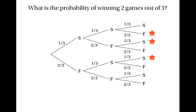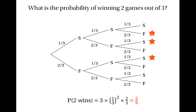You can see that there are three ways in which I can win two games out of three: I can win the first two and lose the last one, lose the middle one, or lose the first one. Each way has the same probability because each time we'd have to multiply one third, one third, and two thirds — just in a different order. So the probability of me winning two games out of three is three times one third squared times two thirds, which equals two ninths.